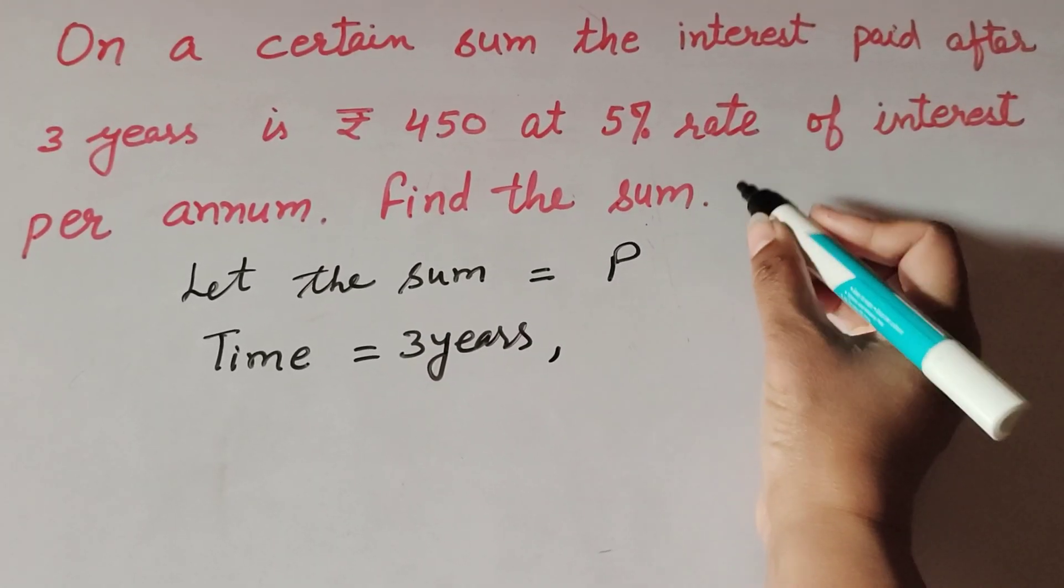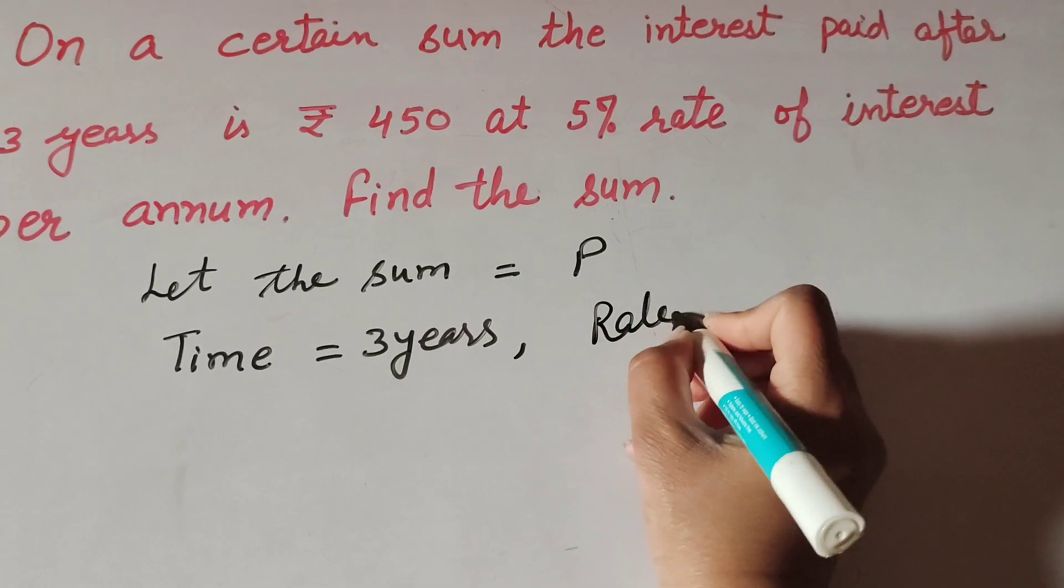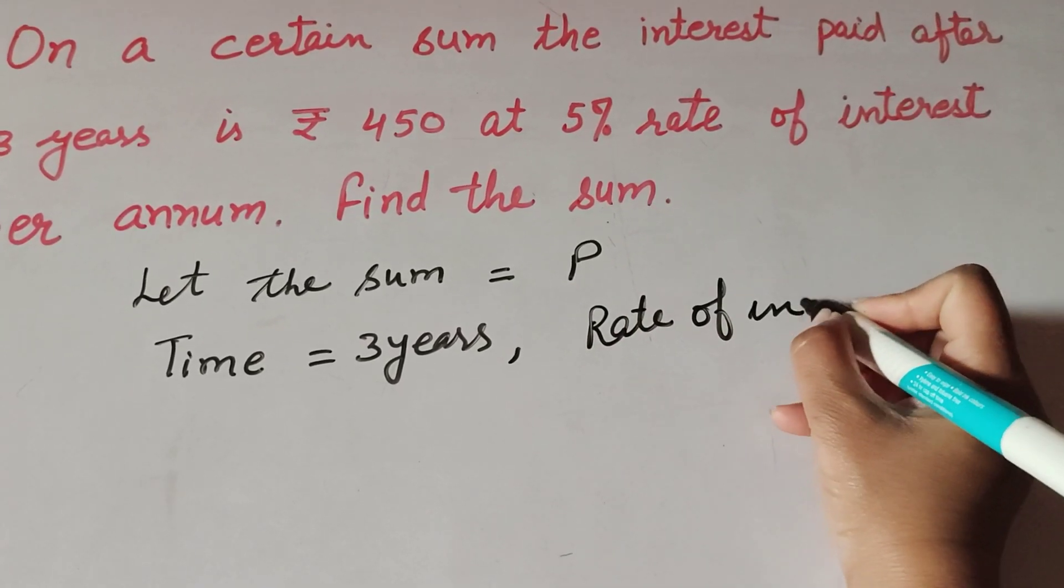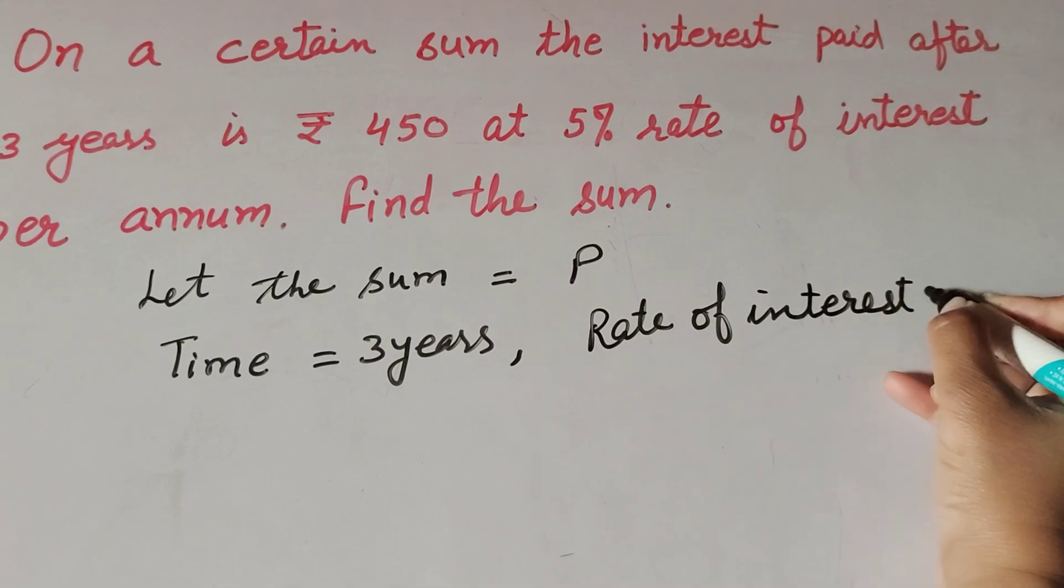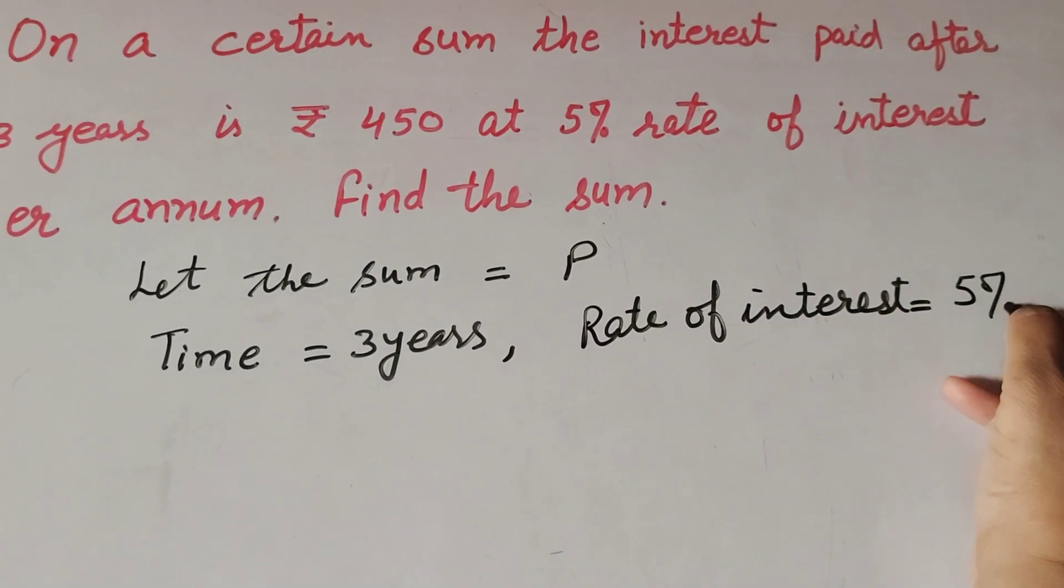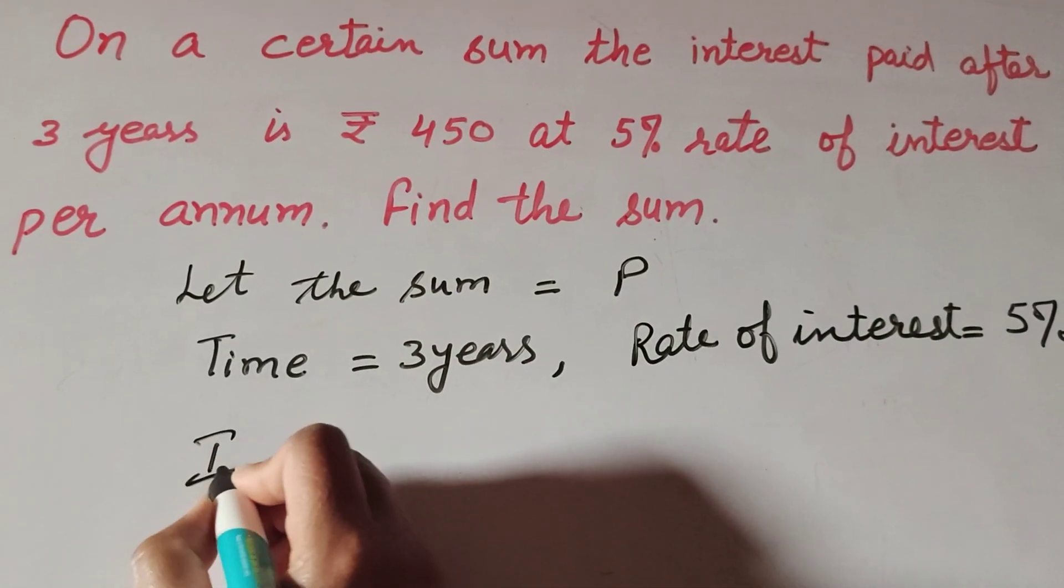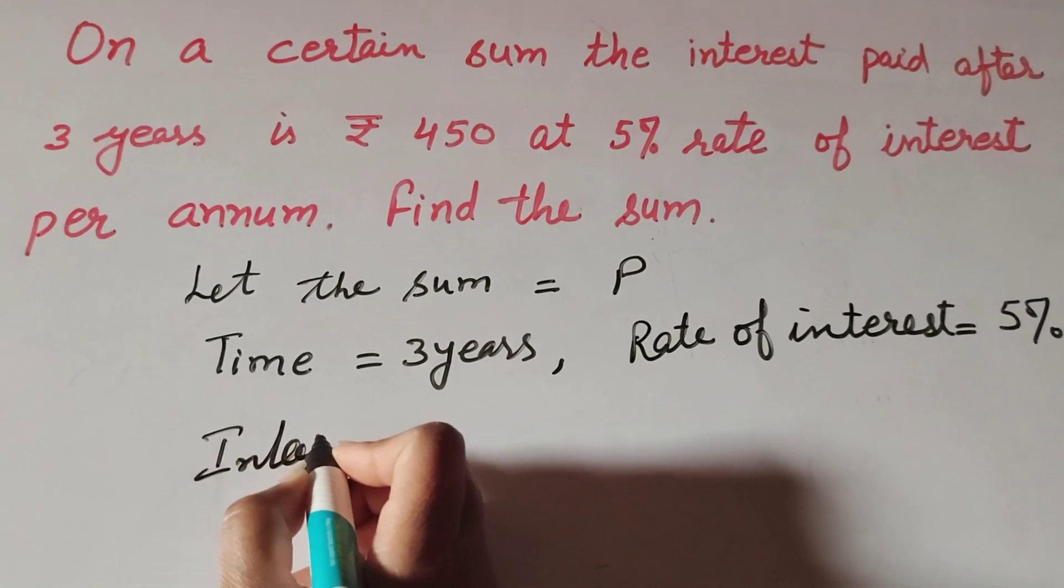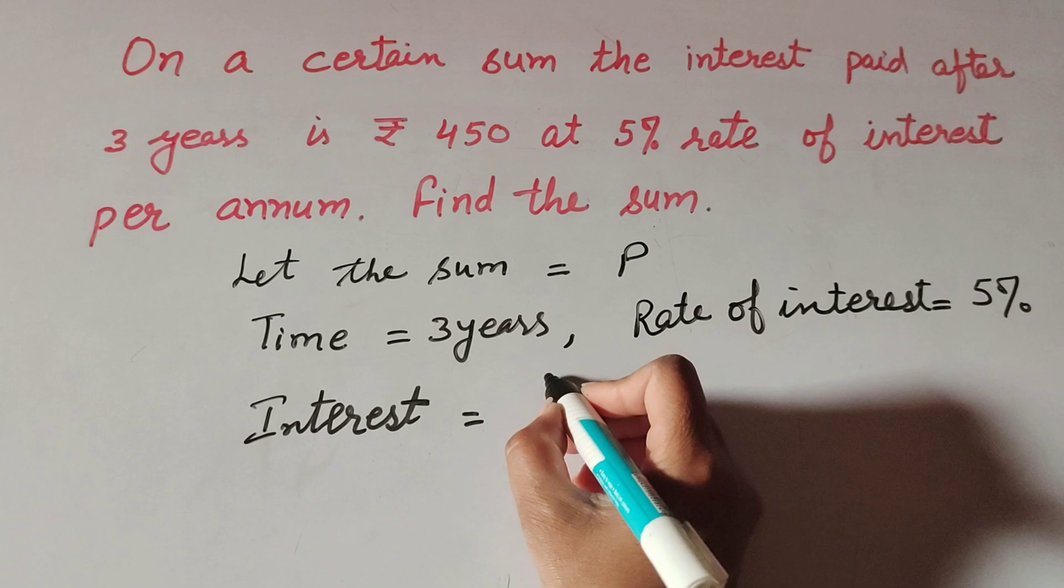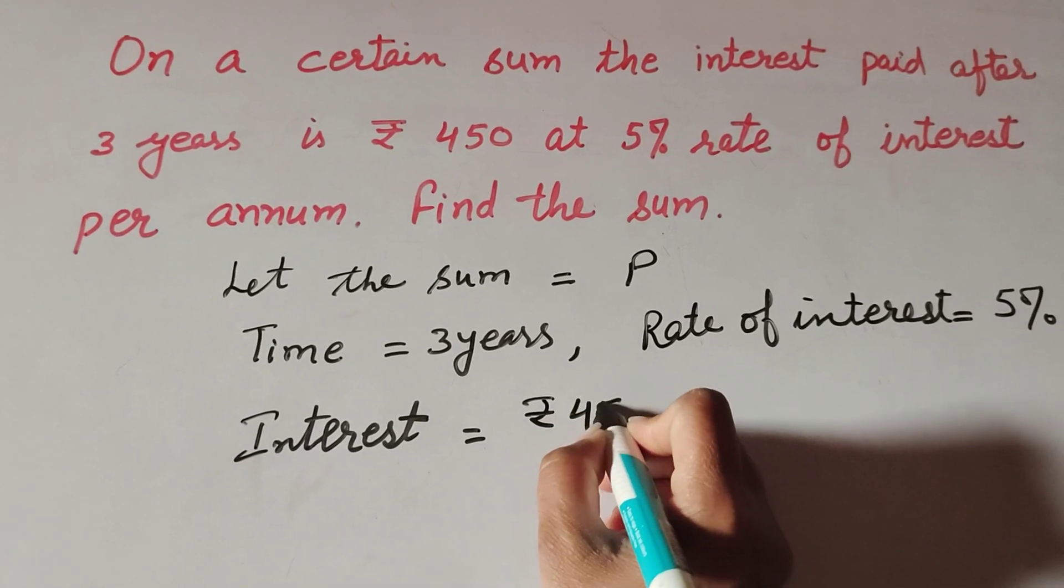Rate of interest is given, rate of interest equals 5%. Interest paid after three years equals ₹450, and we find the sum.